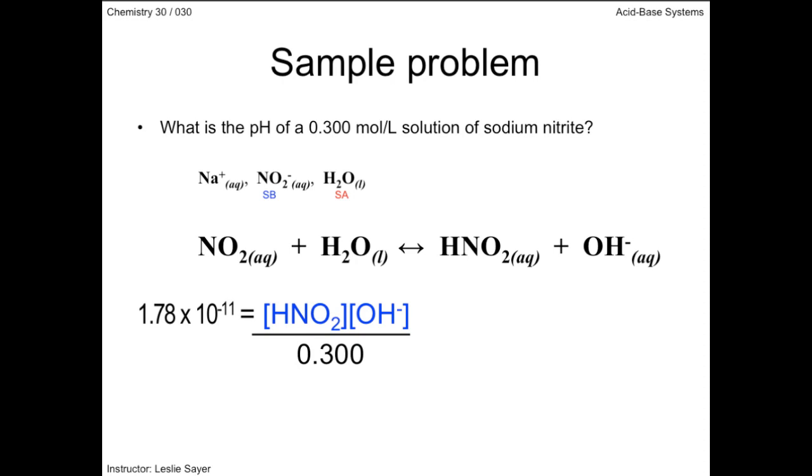So, at equilibrium, the nitrous acid concentration will be the same as the hydroxide ion concentration. Therefore, I can simplify the expression to show that the product of these two concentrations is the same as the hydroxide ion concentration squared.